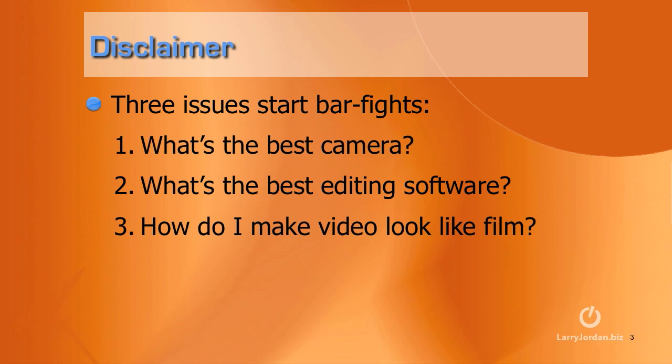There are three issues that start bar fights in video. The first is a discussion of what's the best camera — there is no best camera. It's the best camera for your particular project and for your style of working. The second issue is what's the best editing software — I won't even begin to touch that argument. And the third is how do I make my video look like film. Film captures images entirely differently than video does, and there's a certain point where you can't make them look identical. But many times film images look better than video images because of the craft involved, and it's the discussion of this craft that's the focus of this seminar.